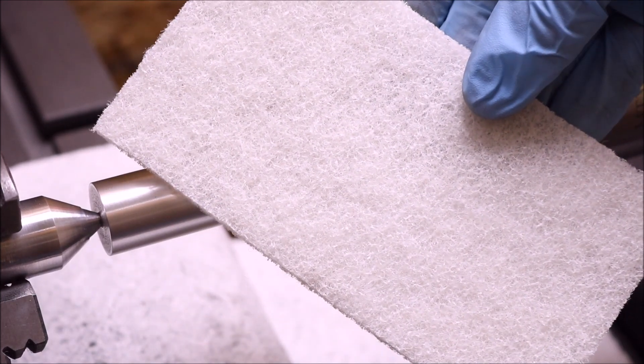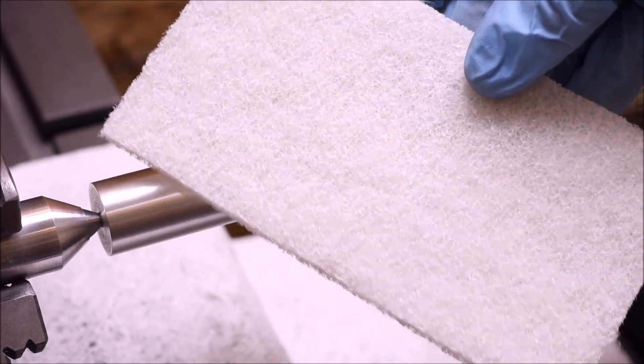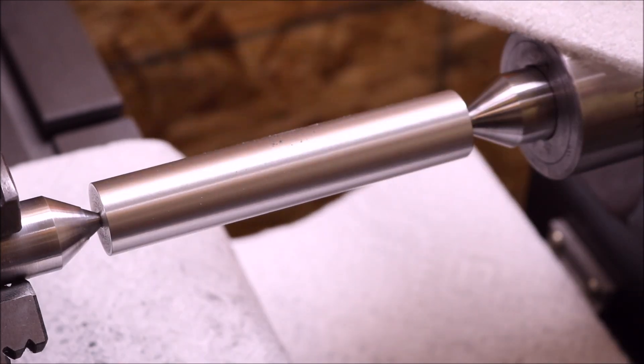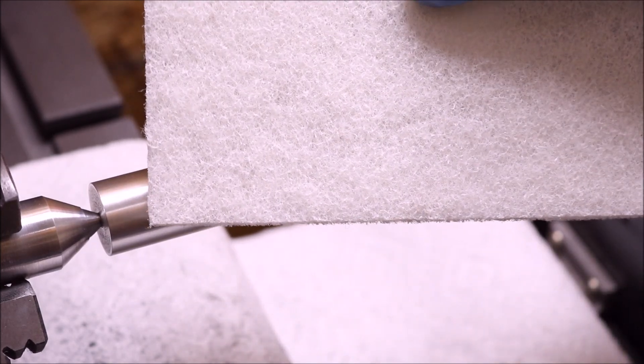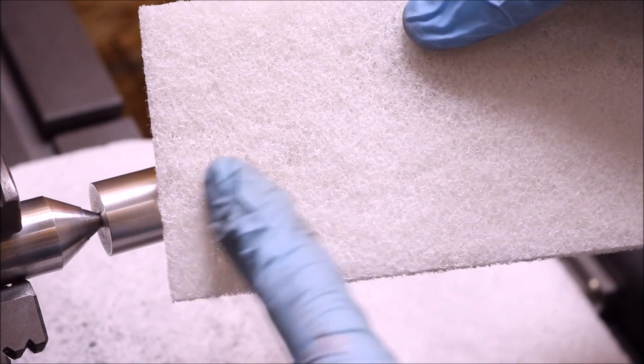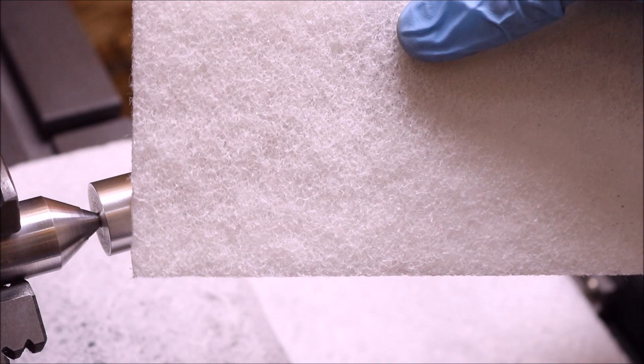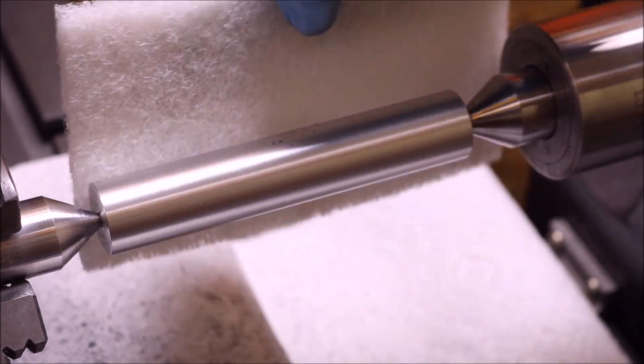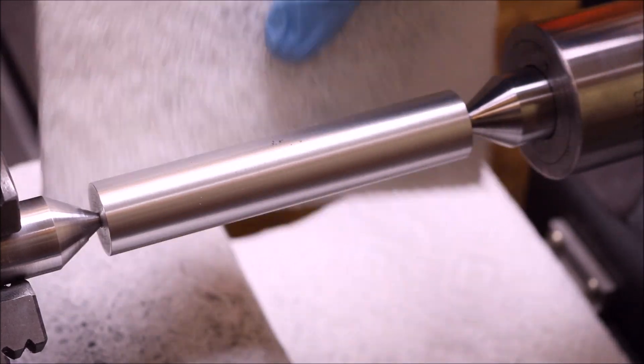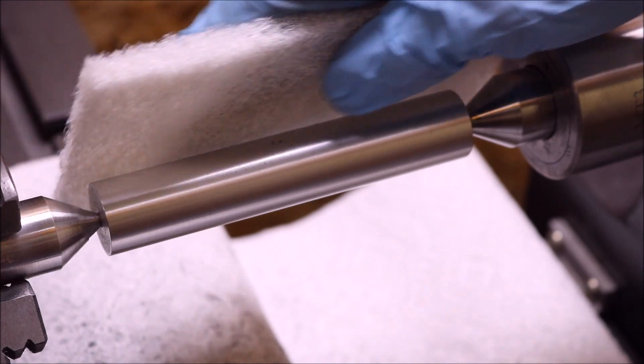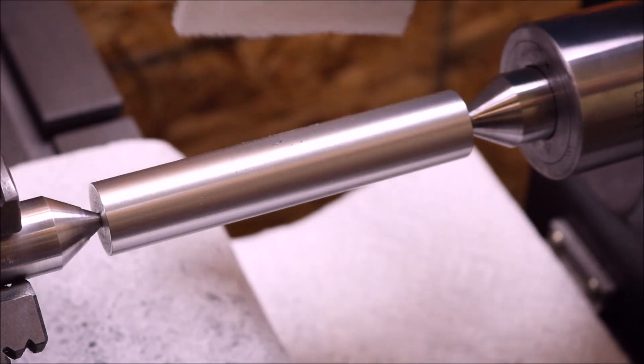Now the white scotch-brite pad is a lot finer, and it isn't particularly made to remove much material. So we're going to use this relatively lightly, and towards the end, as the aluminum builds up on the mesh, we're actually going to use it as somewhat of a burnishing tool. Rubbing the similar materials together will cause a flattening and smoothing of the surface that begins the polishing.